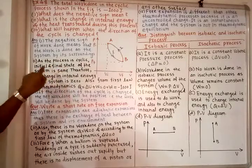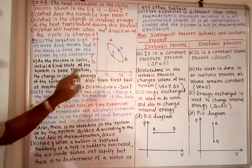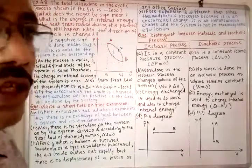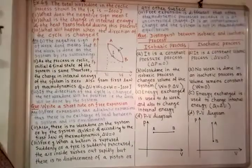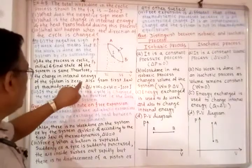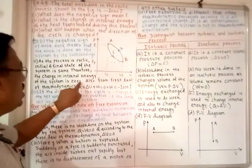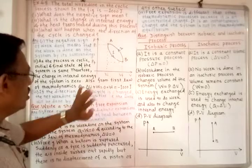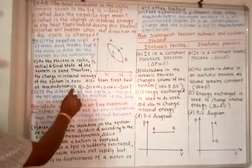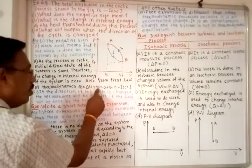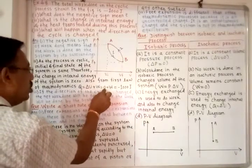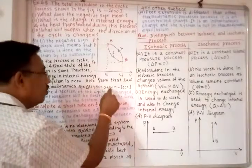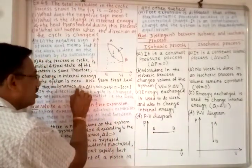For the second question: since this is a cyclic process, the initial and final states of the system are the same. Therefore, the change in internal energy of the system is zero. From the first law of thermodynamics, Q equals delta U plus W. Since delta U is zero, Q equals W.